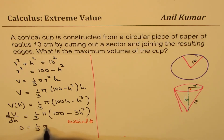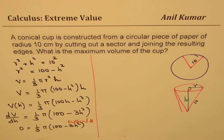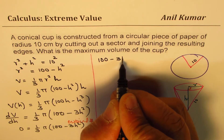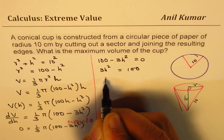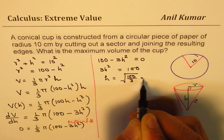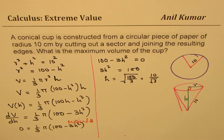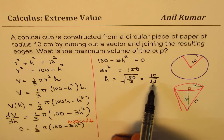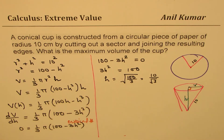Setting dV/dH = 0 gives us (1/3)π(100 − 3H²) = 0. This is zero when 100 − 3H² = 0, so 3H² = 100, giving H = √(100/3) = 10/√3. So our critical number for height is H = 10/√3. Substituting this back into our volume expression will give us the answer.